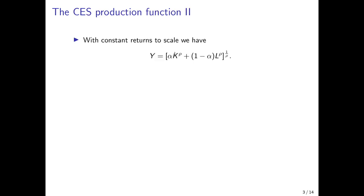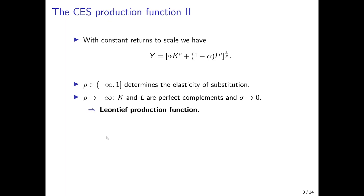In the case of constant returns to scale, xi is equal to 1, so the exponent in the numerator is 1. Rho determines the elasticity of substitution and can attain values from minus infinity to 1. We have the following three main cases.